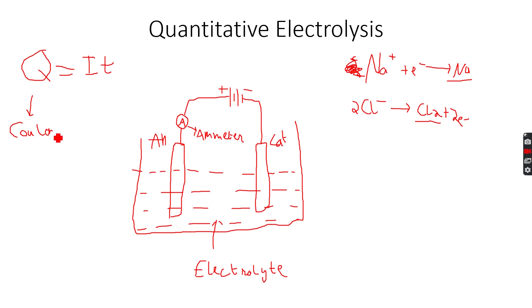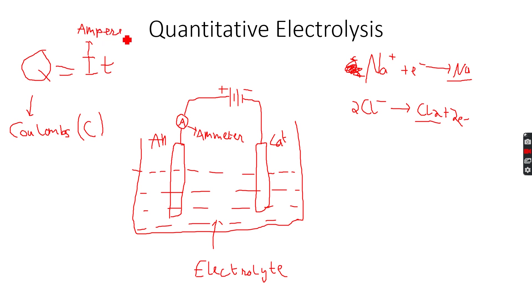The unit of Q is coulombs, with symbol capital C. The unit of current is amperes, with symbol capital A. Time is measured in seconds, with symbol small s — the SI unit.